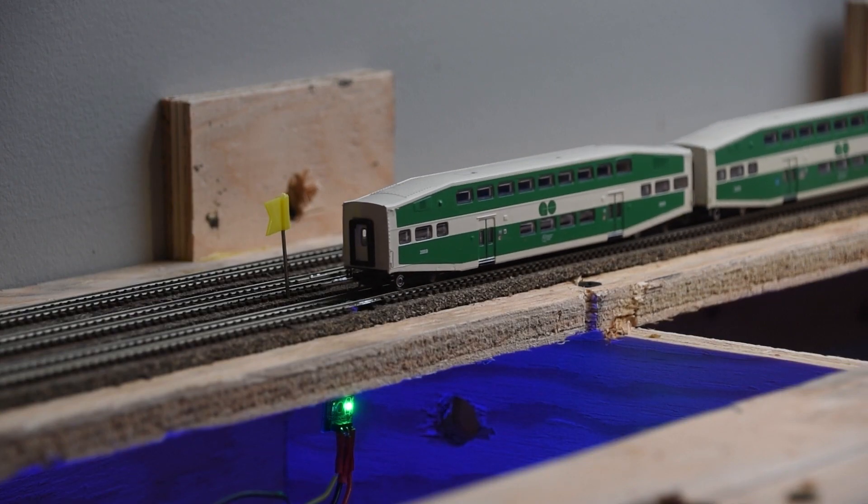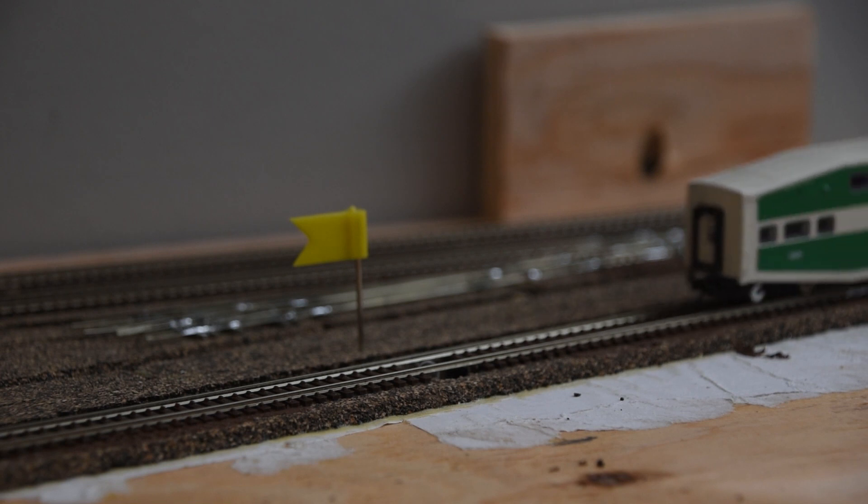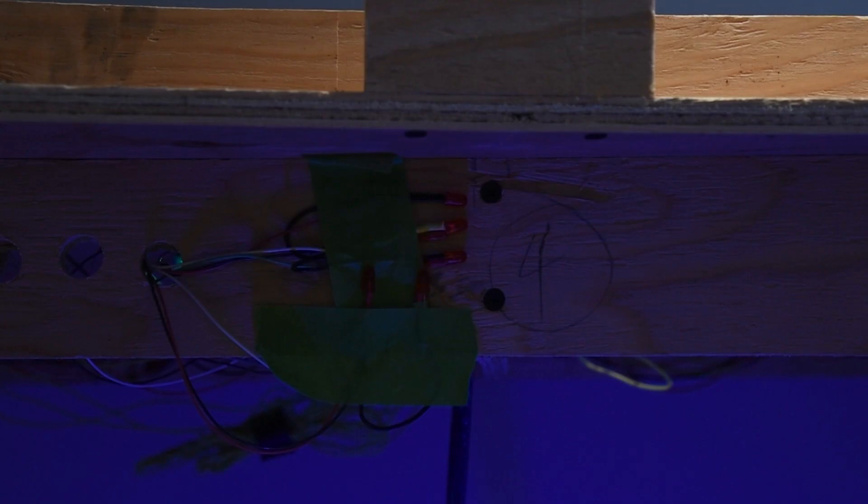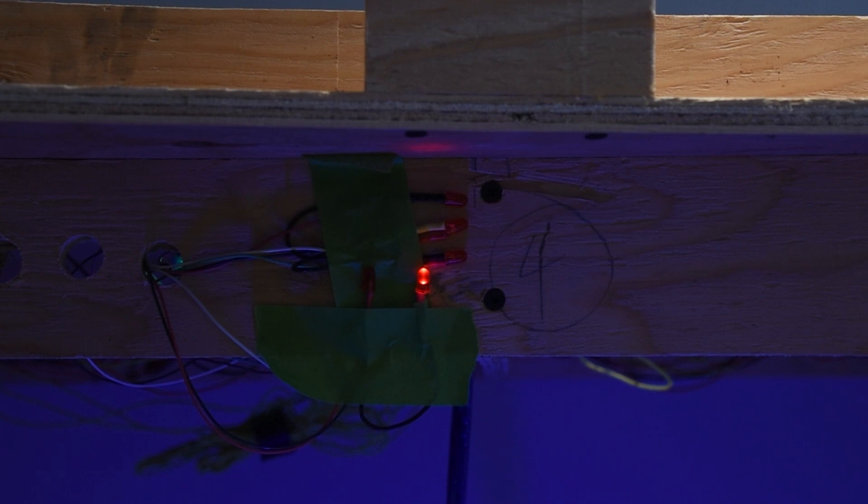When the train enters the block and crosses the first detection point, it shows a flashing light, indicating it's now passing through that siding. Once that same train crosses the second detection point, the LED switches from flashing to solid, indicating that the train has reached its stopping point and it's clear of the points on both ends of the staging track.